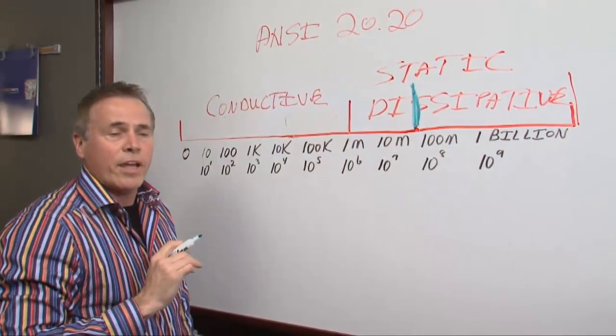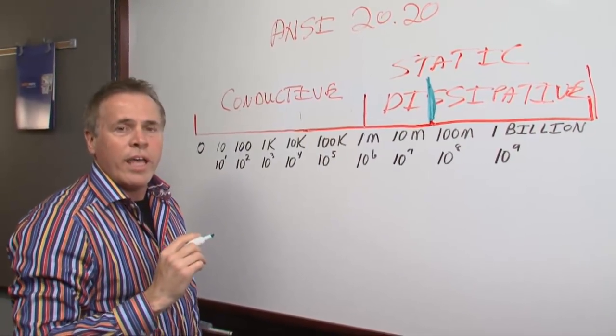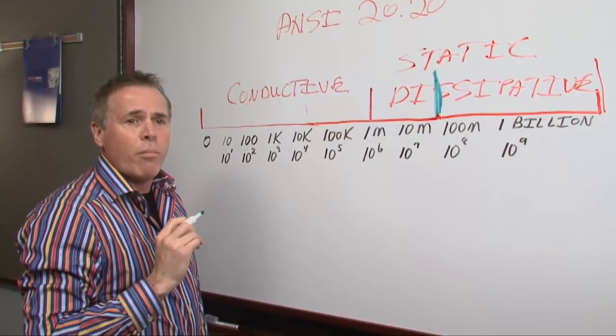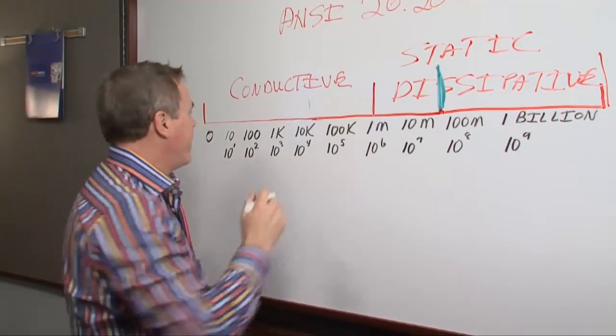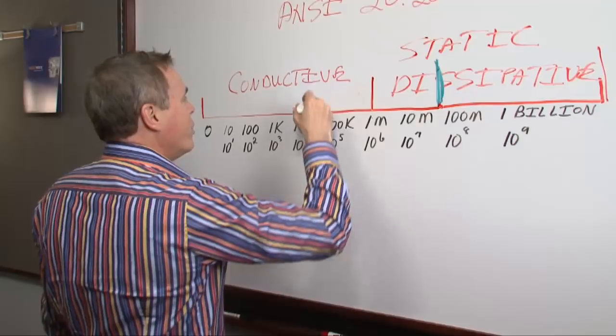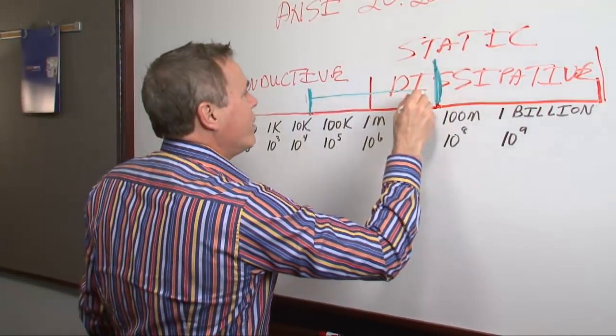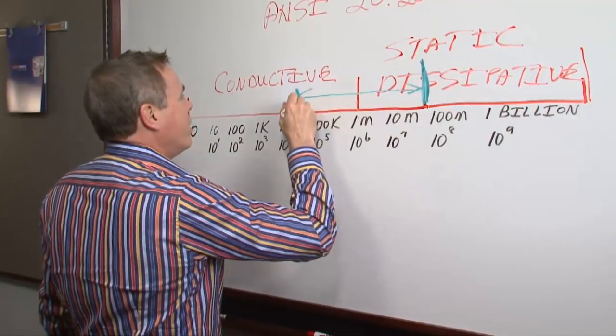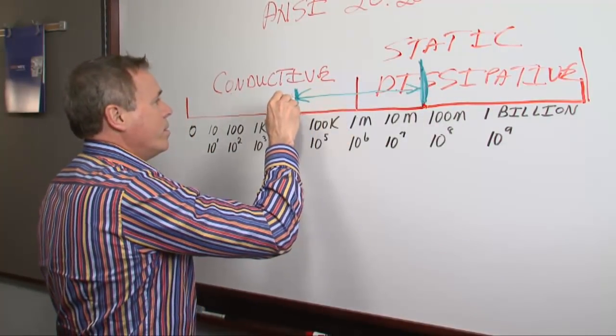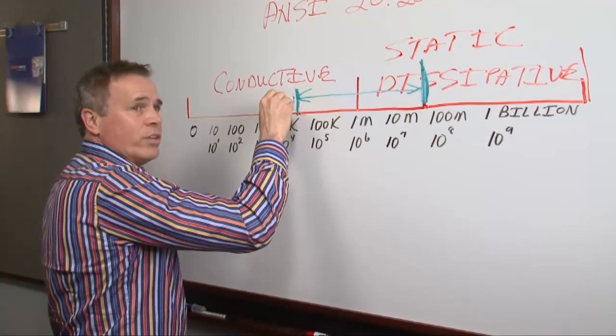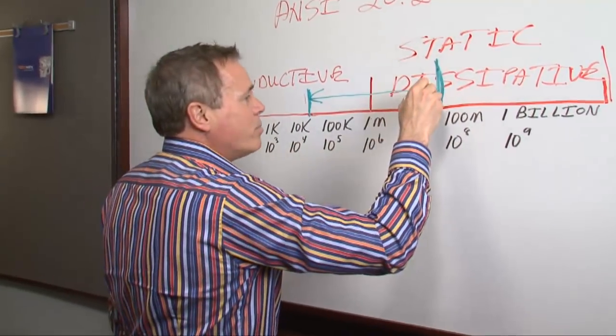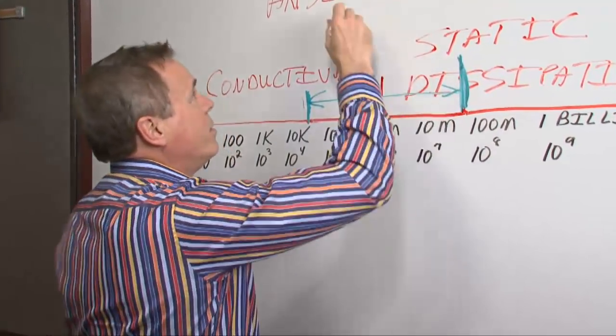The NFPA and OSHA say that the floor has to have always more resistance than 25,000 ohms. Well, here's 10,000, here's 100. So here's 25,000. So in between here and here, we have the lowest margin where you're still safe.